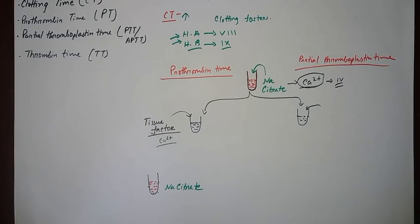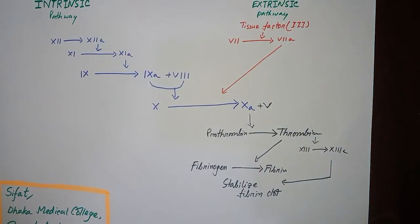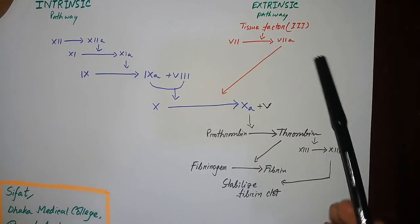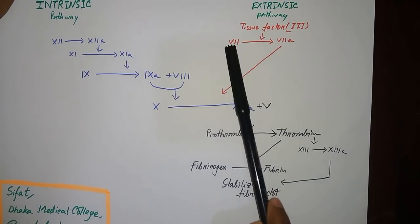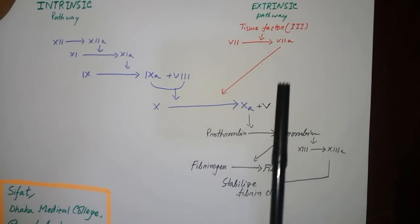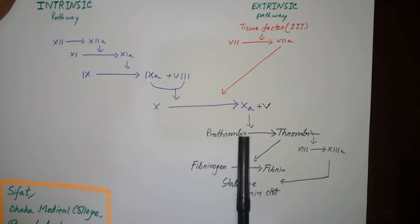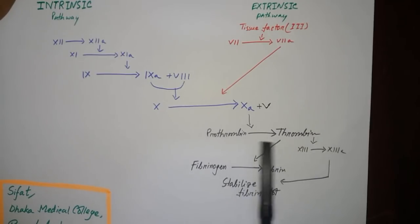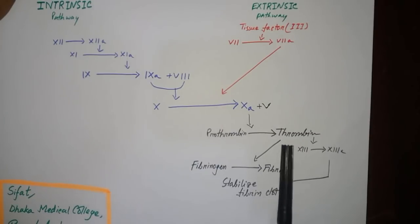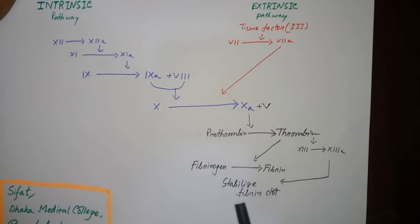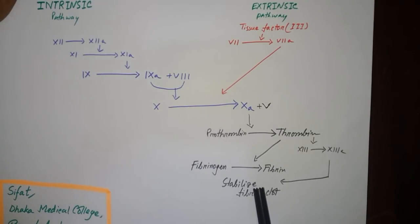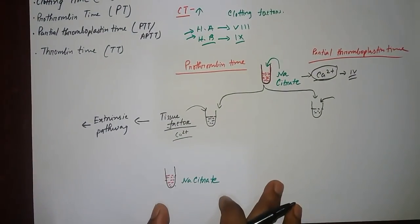In the extrinsic pathway, the tissue factor activates factor 7, and factor 7 ultimately activates factor 10. Factor 10 then causes prothrombin to be converted to thrombin, and thrombin cleaves fibrinogen into fibrin. Thrombin also activates factor 13, which stabilizes the fibrin clot. So by adding tissue factor, we activate this extrinsic pathway.